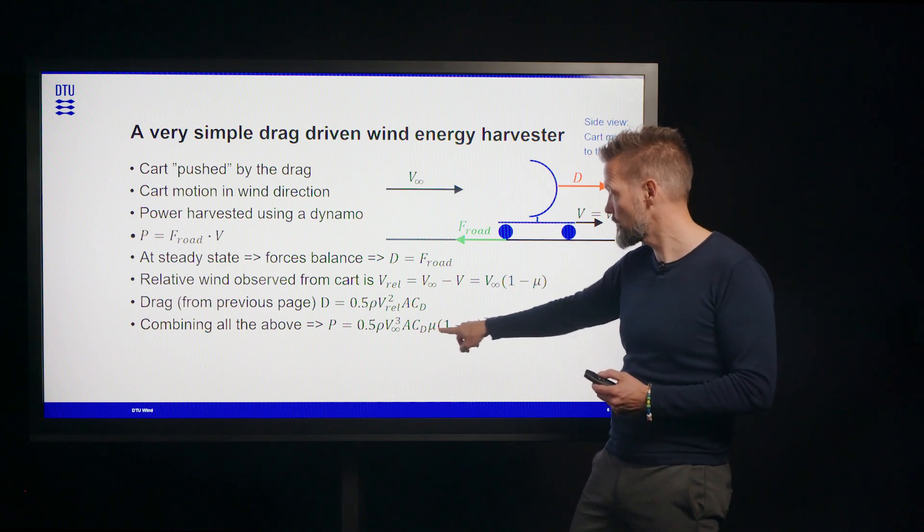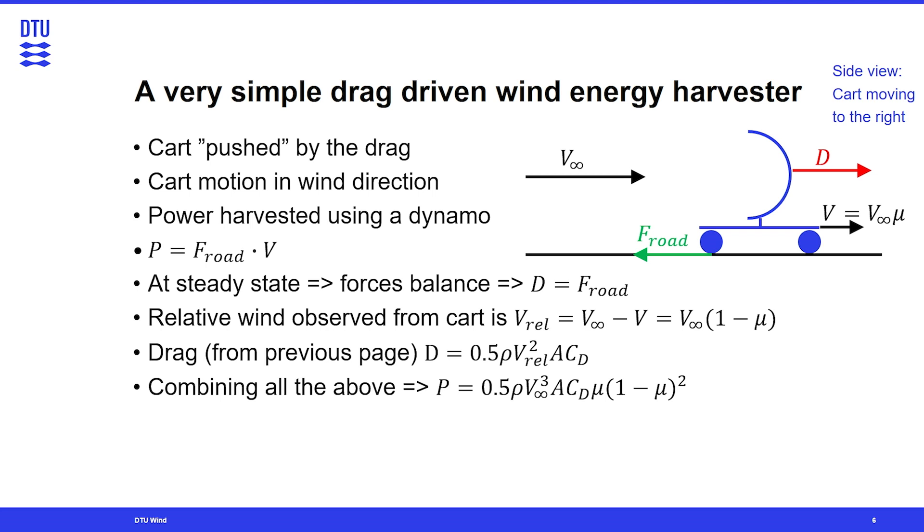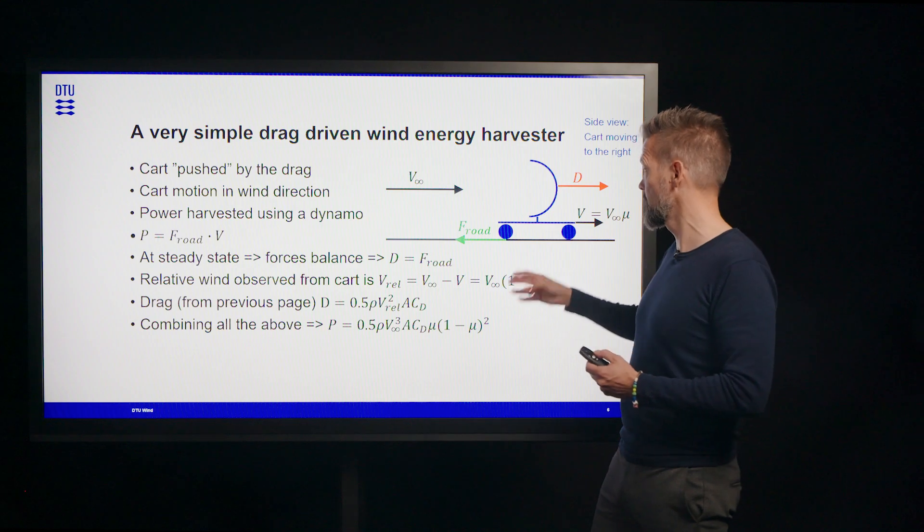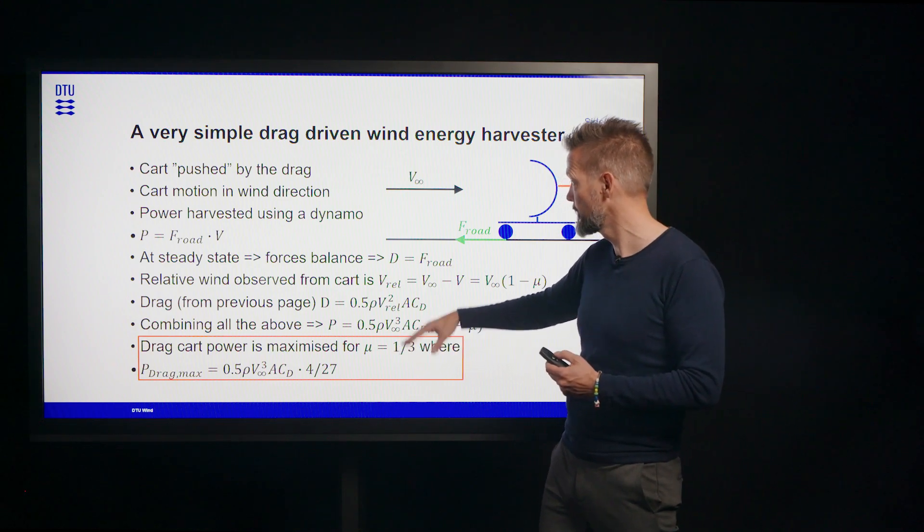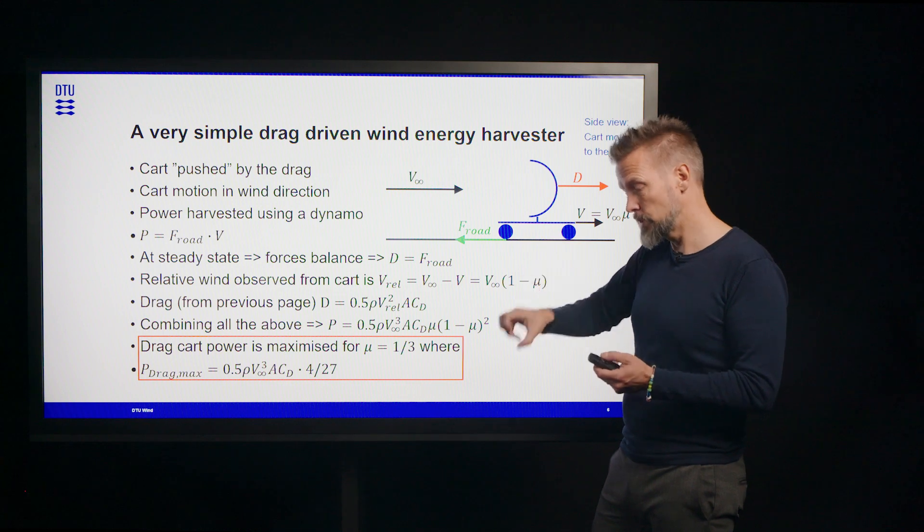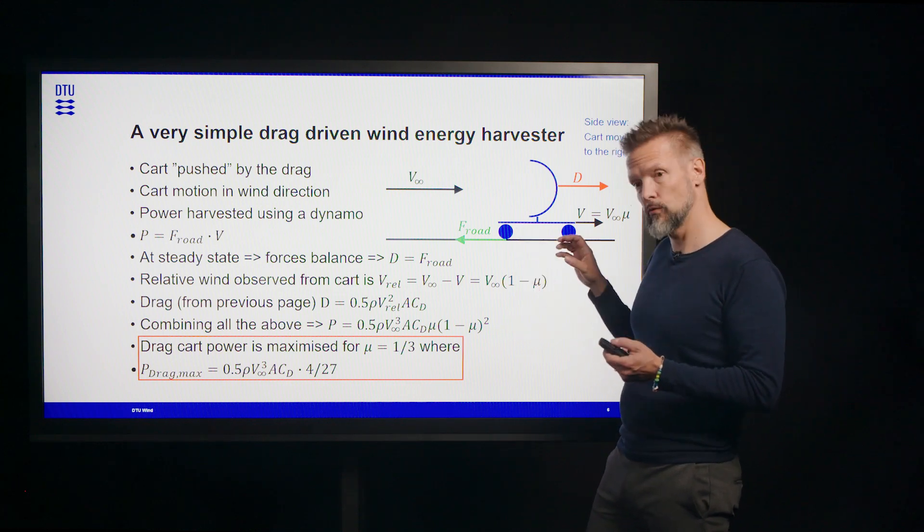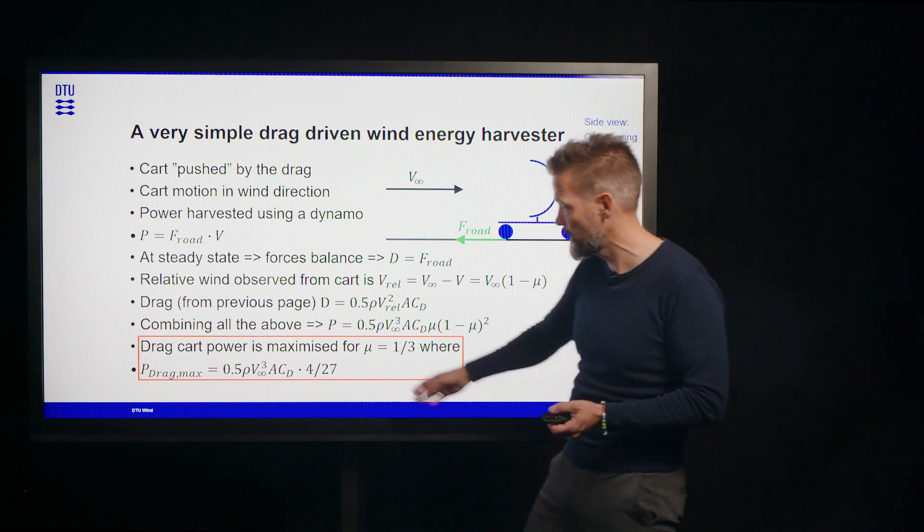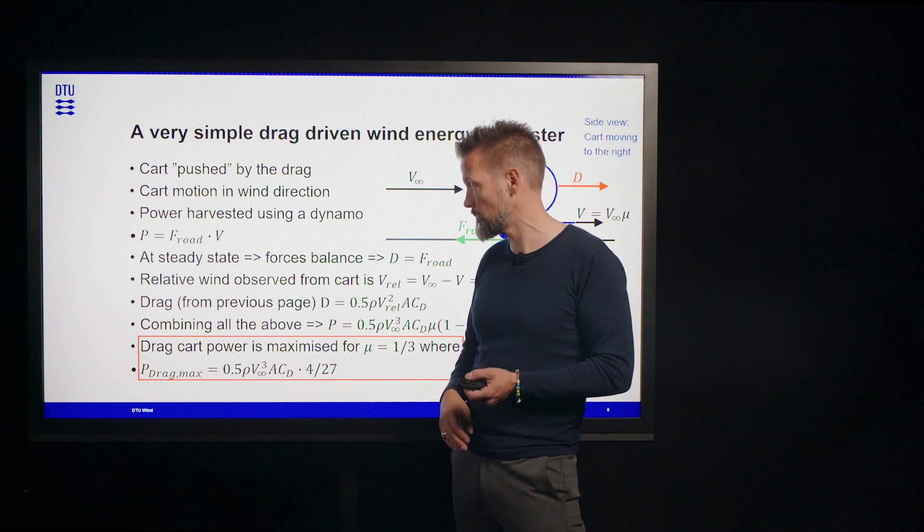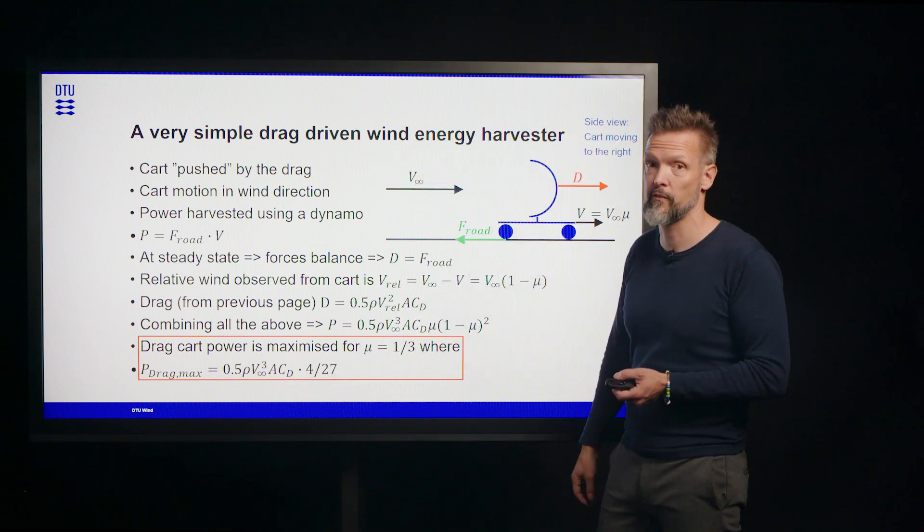This is the cart speed ratio. So it depends on how much the generator slows down the cart. And it also depends on the drag coefficient of this thing, the area, the density of the wind, and it depends on the wind speed, the cube of the wind speed, like all power extraction with wind should do. And if we're interested in just maximizing power out, then we find the speed ratio that will maximize power and turns out to be a third. So the best way to operate a cart like that is to put enough torque on the generator such that the cart moves at a third of the wind speed. And in that case, this part of the expression is 4/27. So this will be the relation for the maximum power that you could pull out of a drag driven device like that.